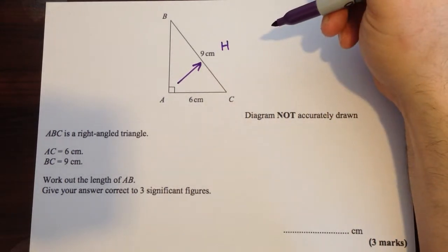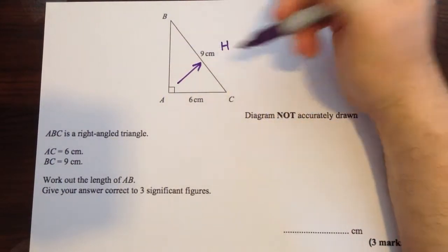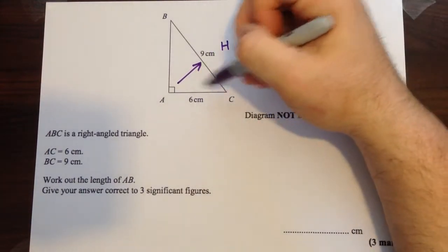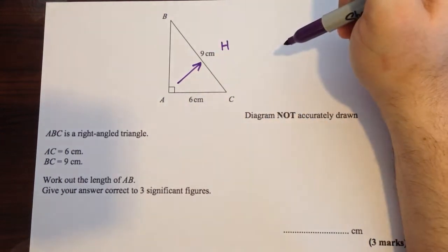Now, because we know that side, that means we're going to have to take it away, because this side here is going to be smaller than that side. It might not be smaller than that side, it's probably going to be longer, but it's definitely going to be less than 9 cm.